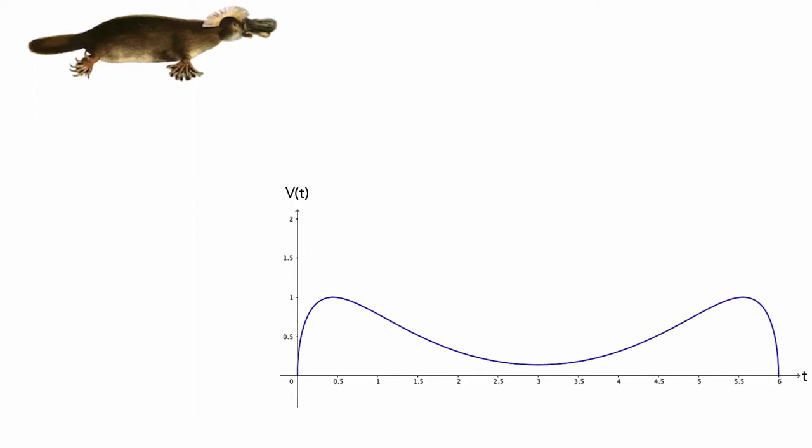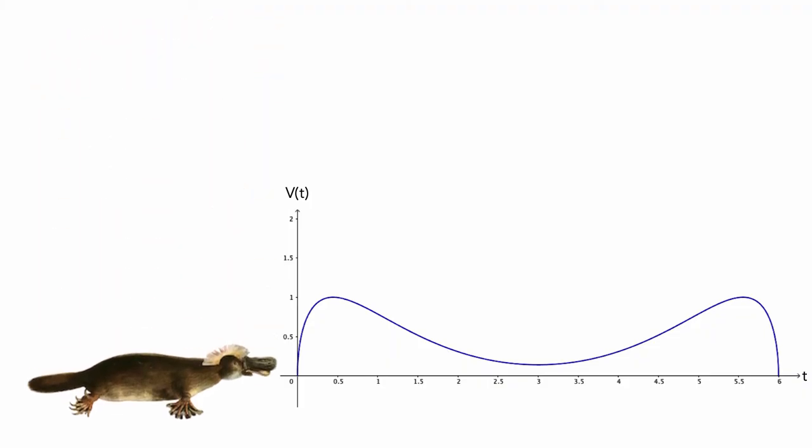Now that we have information about the velocity of the platypus, let's use it to get some information about how far the platypus levitates above the ground. Let's first set the value of x equal to 2, as shown by the red section of the graph. Thus we'll be looking at the first two seconds of the platypus's motion. Now we want to compute the platypus's amount of change of distance from its starting position over these first two seconds.